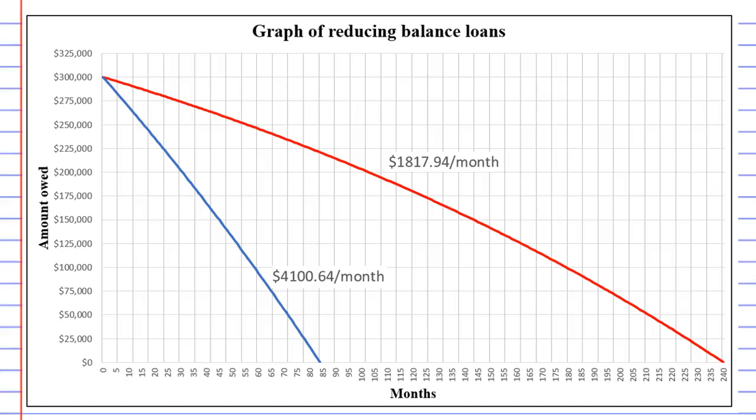In this video, we're going to look at a graph of reducing balance loans. We actually have two different loans here. One is in red and one is in blue. Now, we're actually borrowing the same amount of money. If we look up here, both of them start at $300,000.